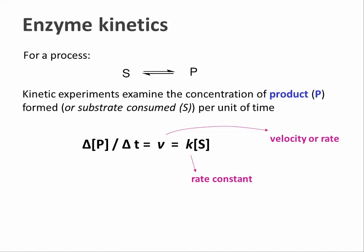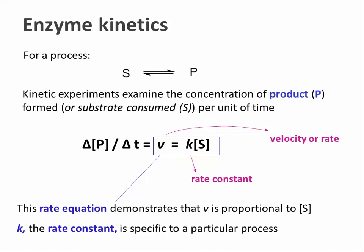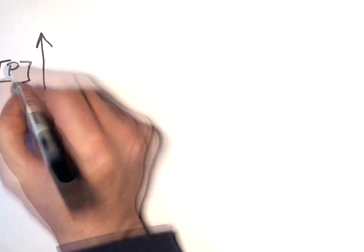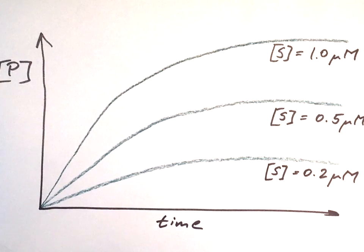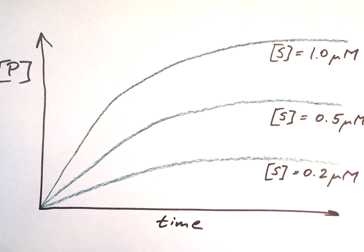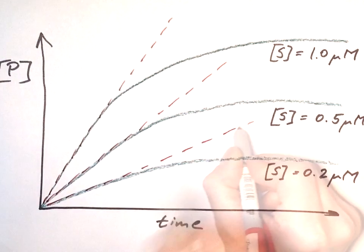For this simple process, the rate equation shows that the velocity or rate of reaction is proportional to the concentration of S, with k being a constant. This rate constant is specific for each reaction. Experimentally we can determine this rate constant by measuring the formation of product P over time for different concentrations of substrate S. We can, for example, measure the concentration of P by spectrophotometry. For all these concentrations, the rate at which P is formed will initially be linear and then level off because S is being used up. The initial rate of reaction, V0, can be read from the linear early part of the curves.